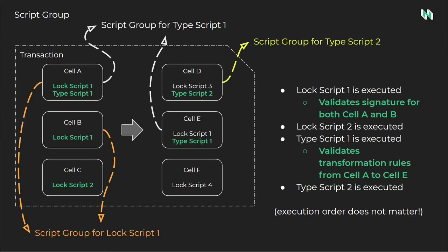Many scripts will rely on the script group in some way, but it's not uncommon for a script to read all of the input or all of the output cells. More advanced scripts may include functionality that requires them to analyze cells outside of their own script group. This opens up the door for highly complex interactions between multiple scripts in a single transaction, and it is all of the scripts cooperating together that form a smart contract on Nervos.